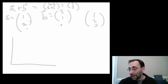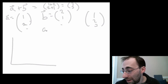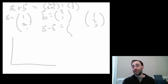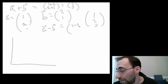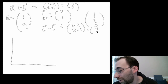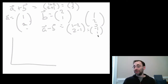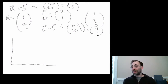Subtraction is similar. If I had A minus B, I would subtract the second from the first. So this would be (1−2, 2−1), which equals (−1, 1). Negative numbers can also appear in vectors, and we'll see how that works better in a second.